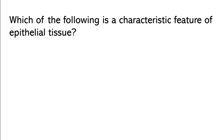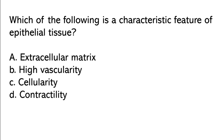Which of the following is the characteristic feature of epithelial tissue? Extracellular matrix, high vascularity, cellularity, contractility. So the correct answer is option C: Cellularity.